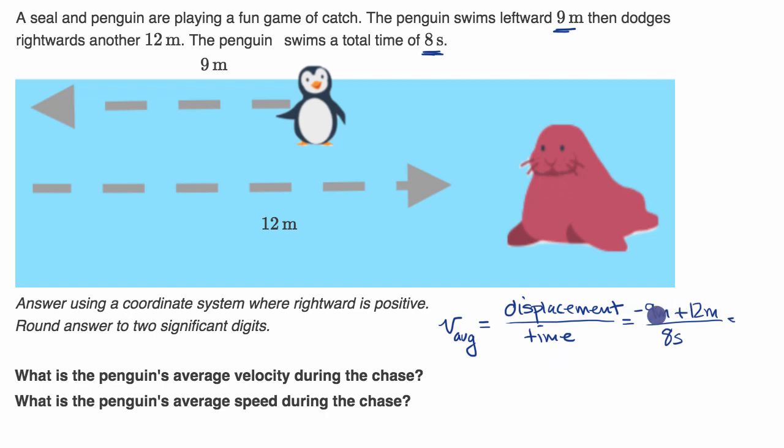And what's this going to be equal to? Well, negative nine plus 12 is a net of positive three over eight, and our units of course are meters per second. So three-eighths of a meter per second.